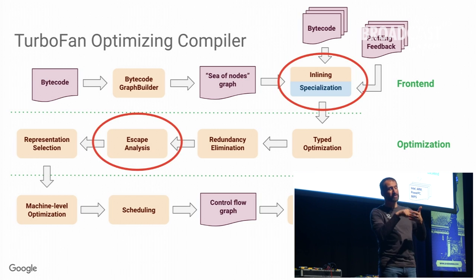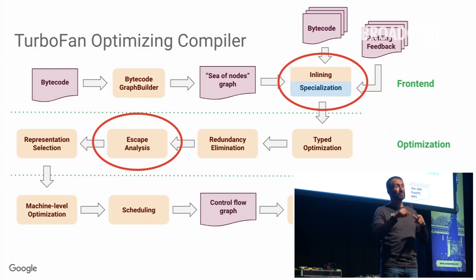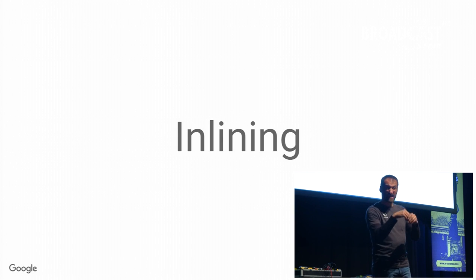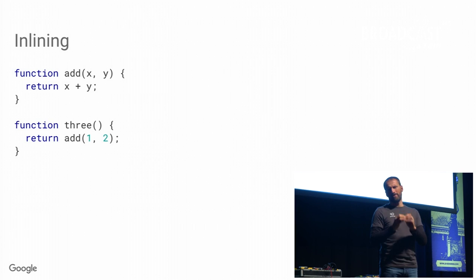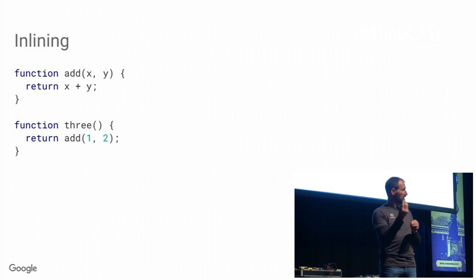Today I want to give you two examples of passes that we do. One is the inlining pass and the other is the escape analysis pass, which I like the most. Let's start with inlining. Some of you might already know what that is. Let's say you have two functions: a function 'three' that calls a function 'add', and 'add' is very simple — it takes x and y and just produces the result of x plus y.